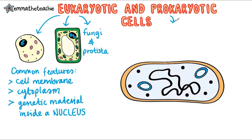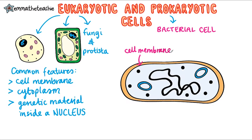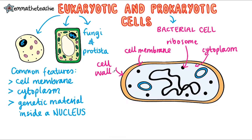Prokaryotic cells are different. All bacteria are prokaryotes, so we're going to look at a bacterial cell to see the organelles that it contains. They've still got a cell membrane, and they still have a cytoplasm, and they've still got ribosomes. They always have a cell wall, unlike eukaryotes which only sometimes have a cell wall, and unlike plant cells, it is not made of cellulose.